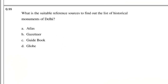Question number 55: What is the suitable reference source to find out the list of historical monuments of Delhi? Options: Atlas, Gazetteer, Guidebook, Globe. The answer is Guidebook.